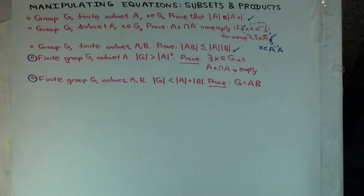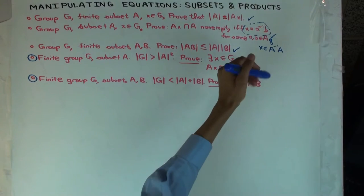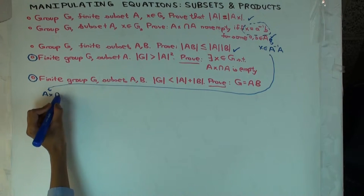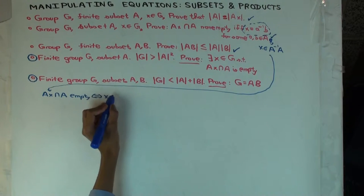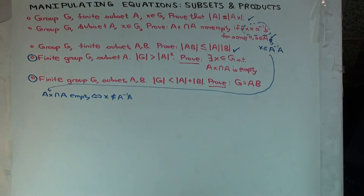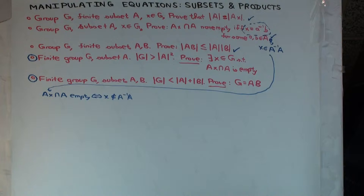So AX intersect A is empty if and only if X is not in A inverse A. So what do we need to show? In order to show that there exists X in G such that AX intersect A is empty, we need to show that there exists an X in G such that X is not in A inverse A.